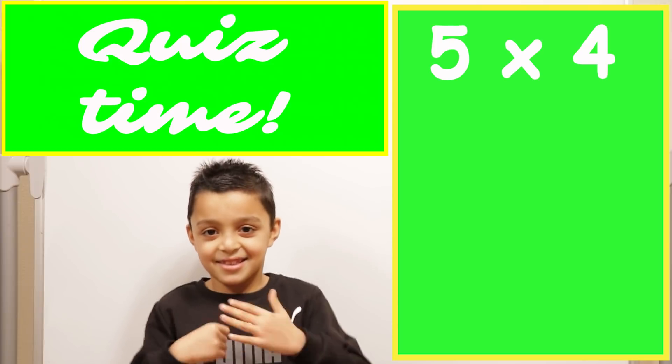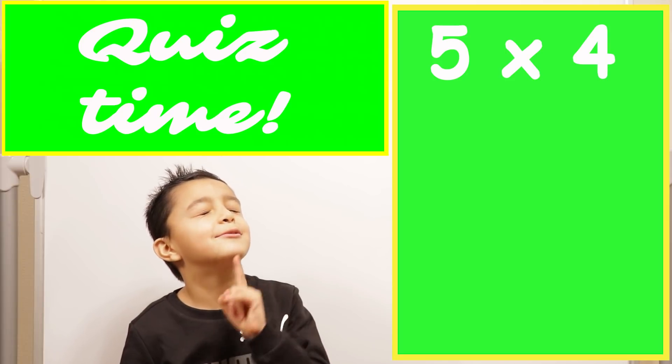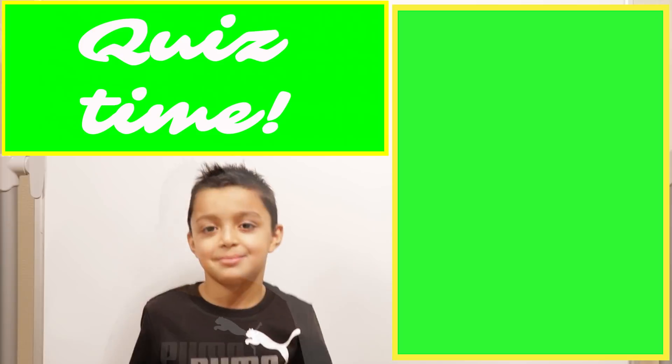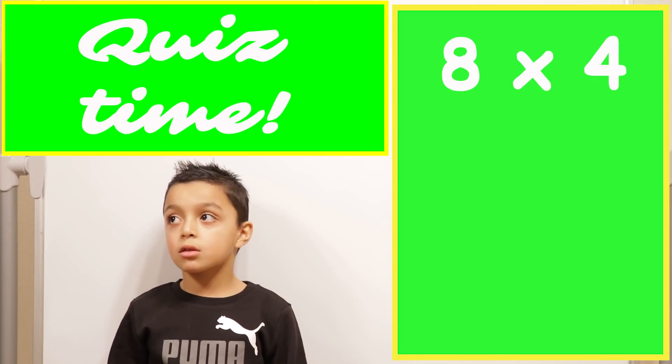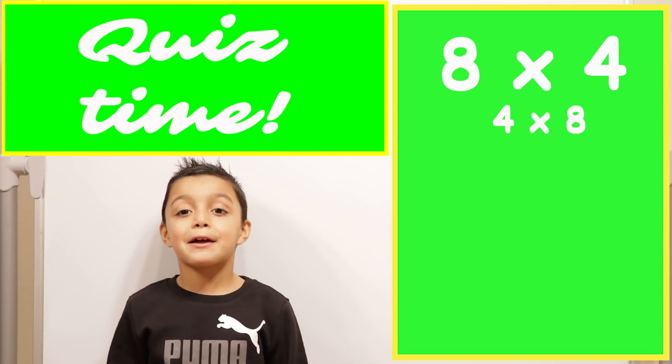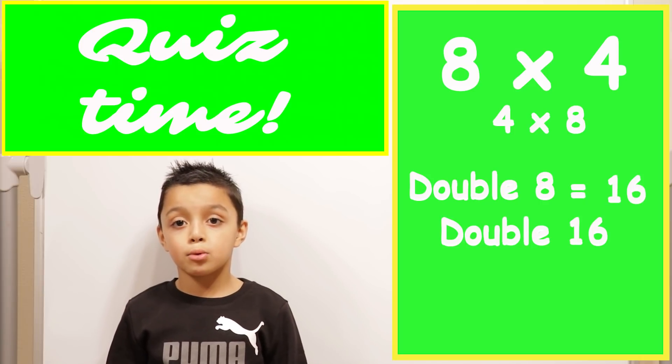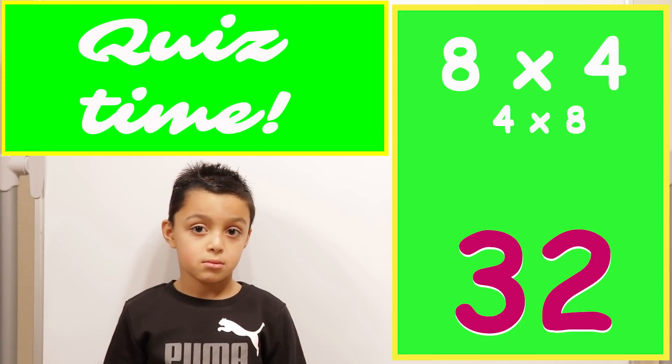Five times four. Twenty. Twenty, good. Eight times four. So I'll swap it around, four times eight, and then double the eight which is sixteen, and then double sixteen which is thirty-two. So the answer is thirty-two. Correct, very good.